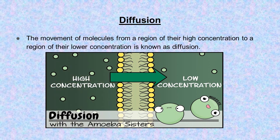Studies on the function of plasma membrane have shown that it performs certain physical activities such as diffusion and osmosis for the intake of some substances. What is diffusion? The movement of molecules from a region of high concentration to a region of lower concentration is known as diffusion.